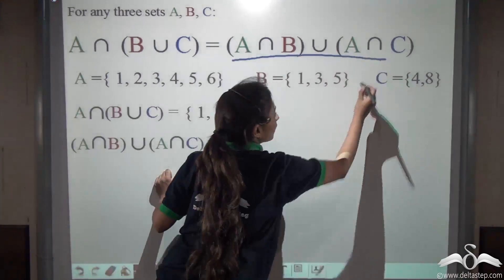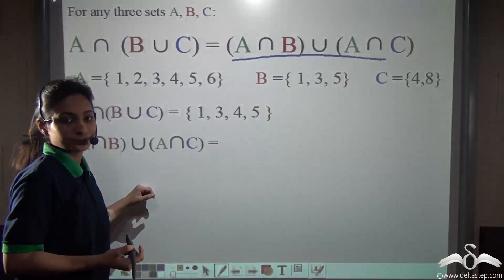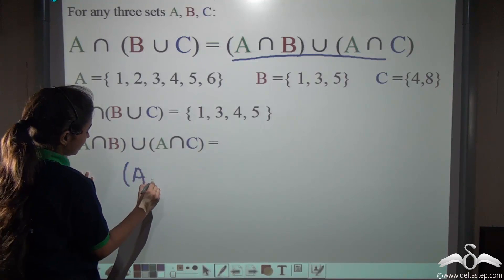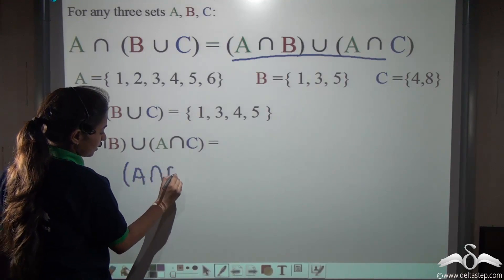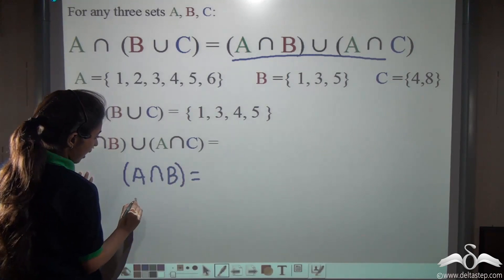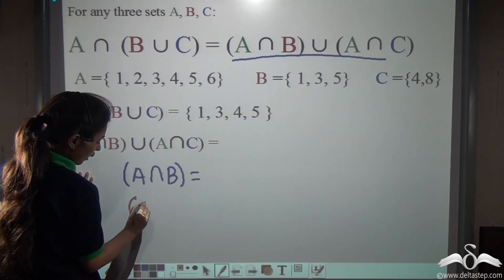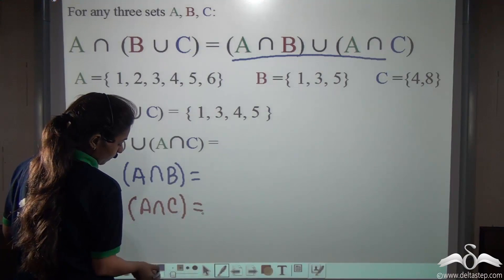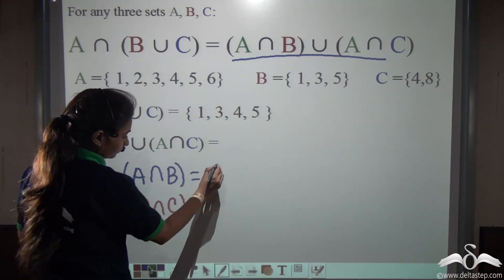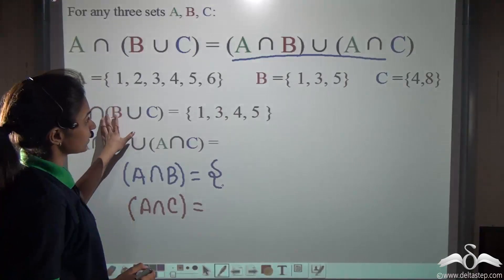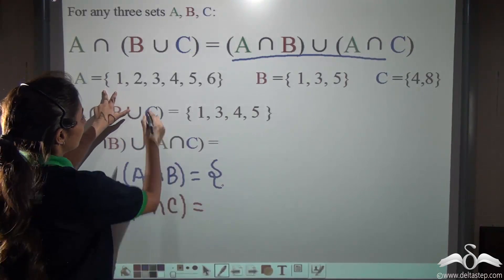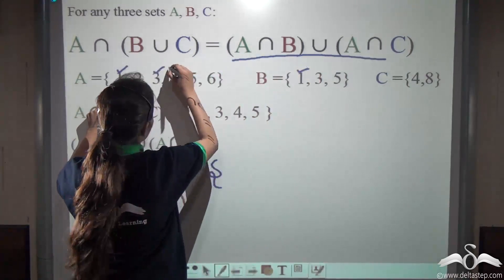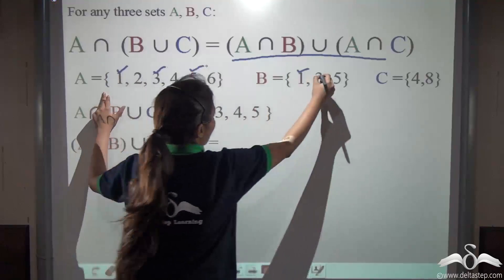Find out the answer. First let's find the brackets: A intersection B and A intersection C. What will be A intersection B? We get 1, 3 and 5.